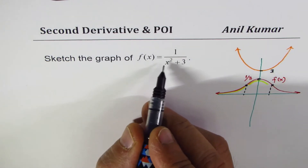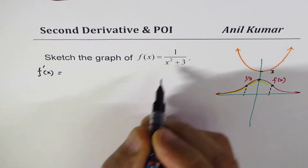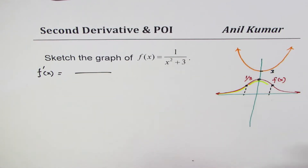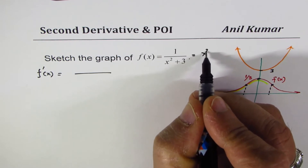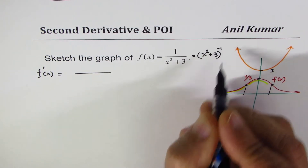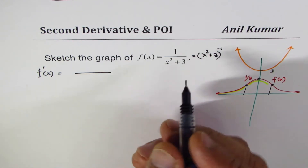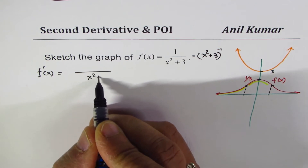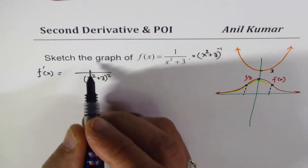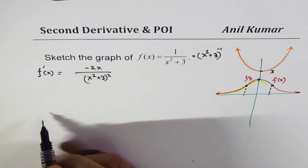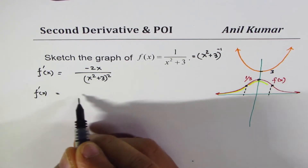We have f(x) = 1 over (x² + 3). The first derivative, using the quotient rule or writing it as (x² + 3)^(−1) with the power rule, gives f'(x) = −2x over (x² + 3)².